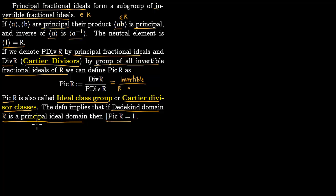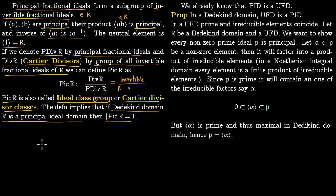Recall that in a Dedekind domain every fractional ideal is invertible, so we can speak purely in terms of fractional ideals. We already know that a principal ideal domain is a unique factorization domain — this holds for any general ring. A Dedekind domain is a kind of small paradise in which everything holds: in a Dedekind domain, a unique factorization domain is a principal ideal domain.